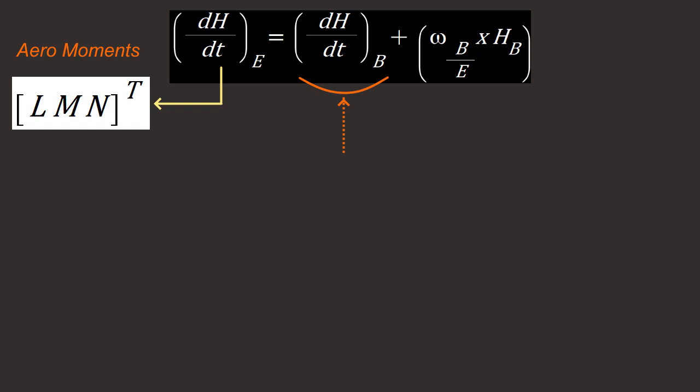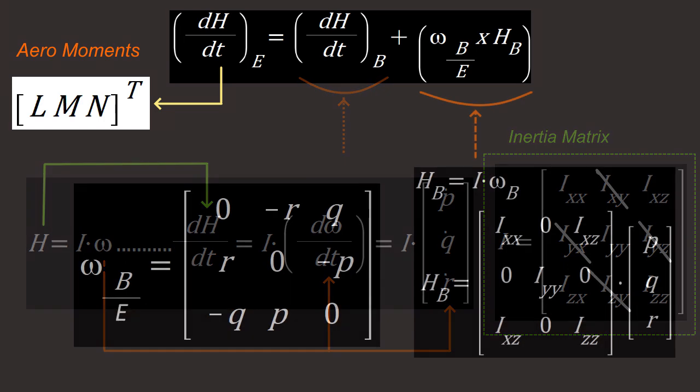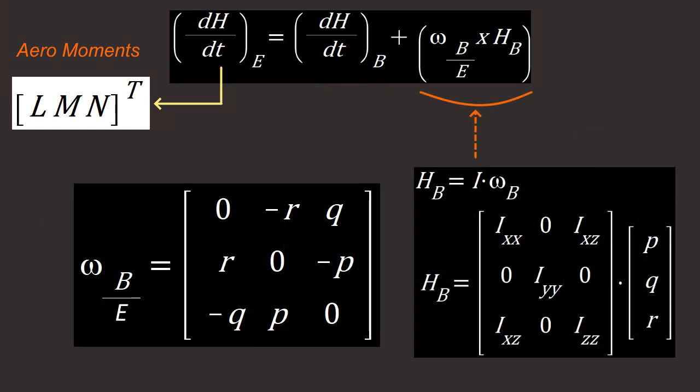Let's first solve for DH over DT in the body frame. Since H equals I Omega, then obviously DH over DT equals I times D Omega over DT, and that's simply P dot, Q dot, and R dot. It is just a rate of change of Omega in the body frame. The inertia matrix you can see here is given by this matrix there, and this is a standard law in dynamics. The thing in our case is that we will assume our airplane is symmetric, so it's like two engines on one side, two engines on the other side. Most airplanes now are symmetric, so we can say that IXY and IYZ equals zero.